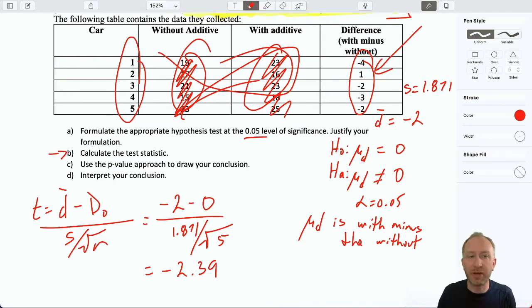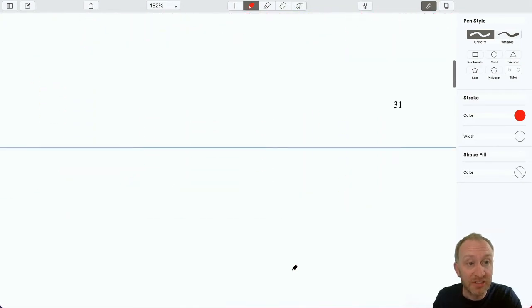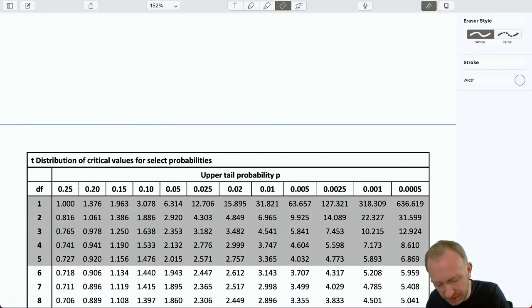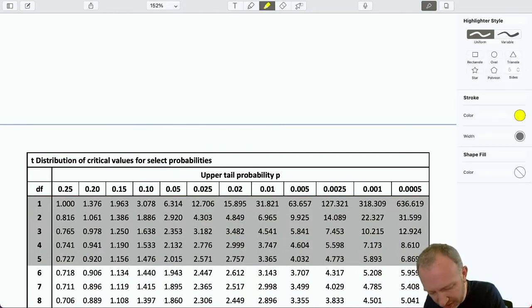But, at this point, everybody's just kind of chugging along, right? You're one step ahead of me. Our degrees of freedom, n minus 1. I've only got 5. So, our degrees of freedom here is just 4. I can scroll down to my t-distribution. I'm looking at just 4 degrees of freedom.